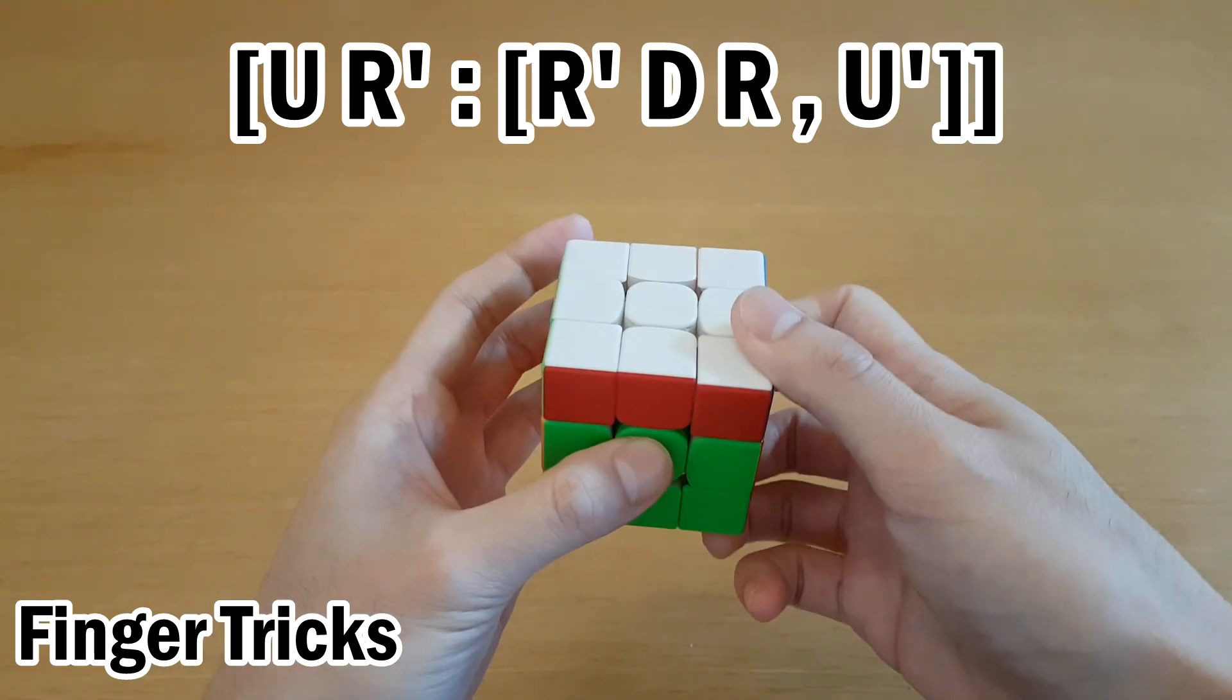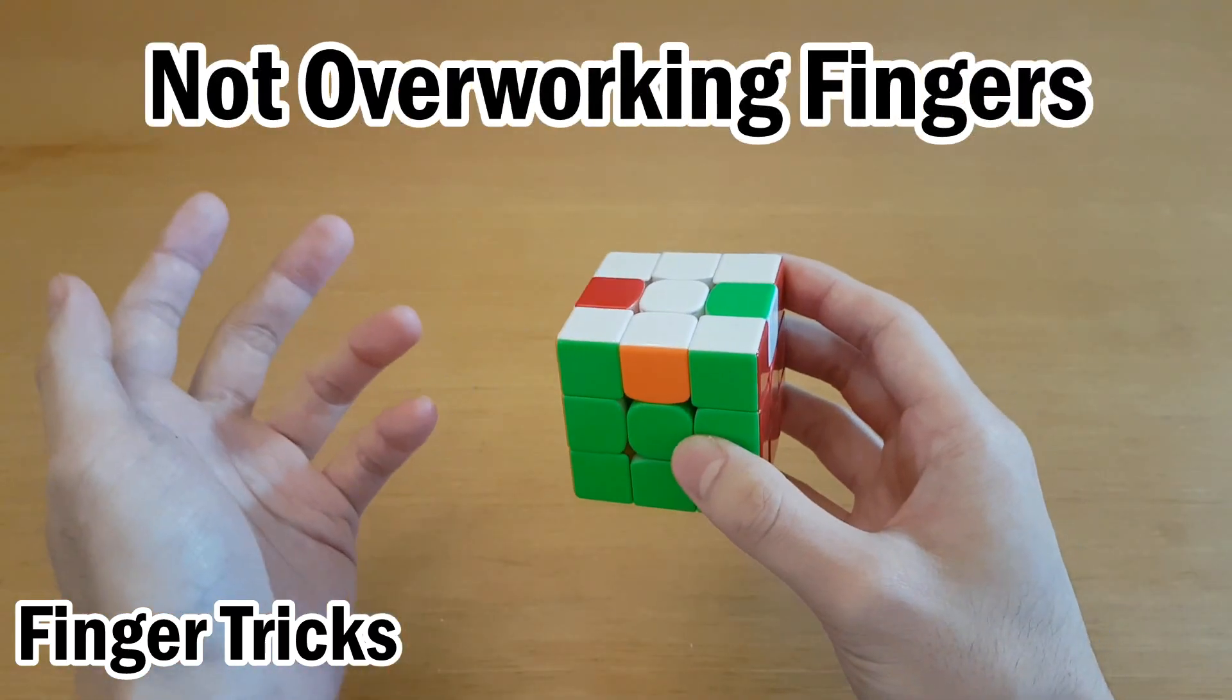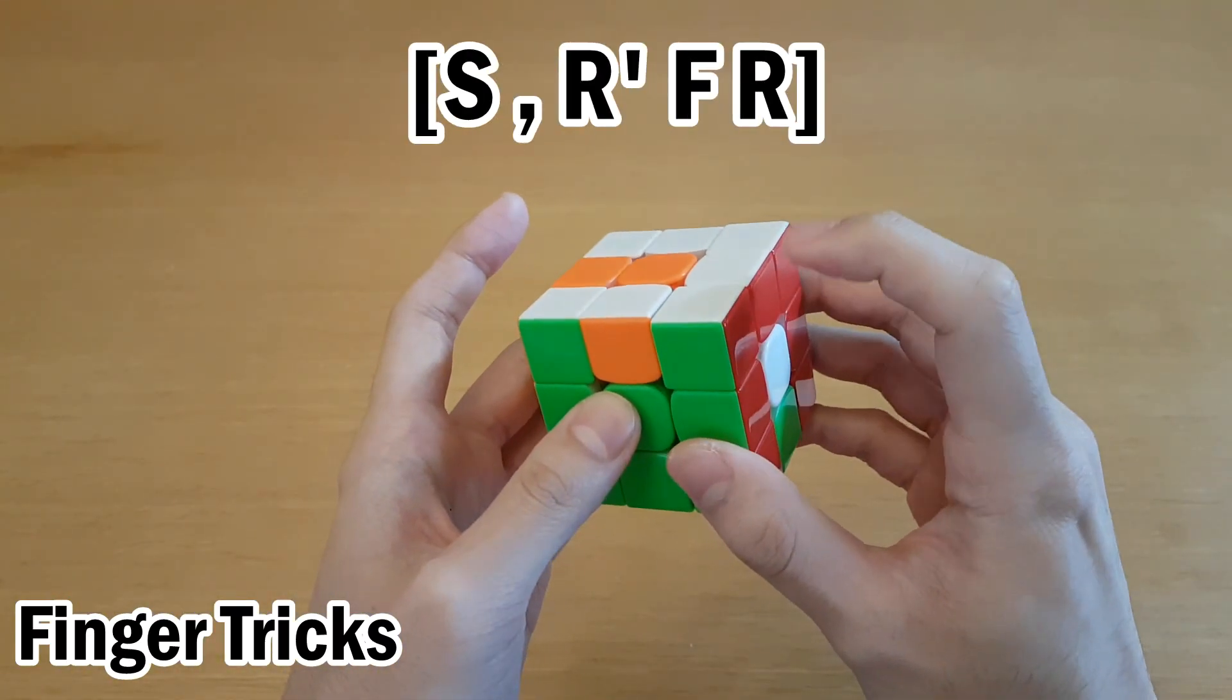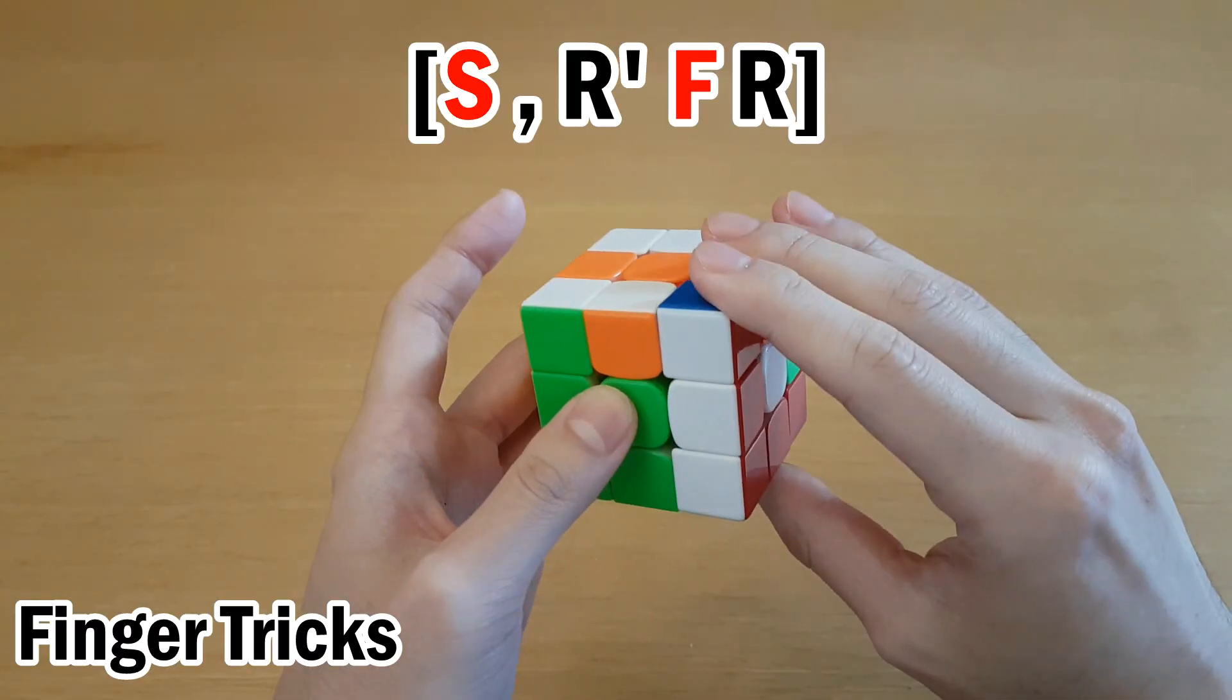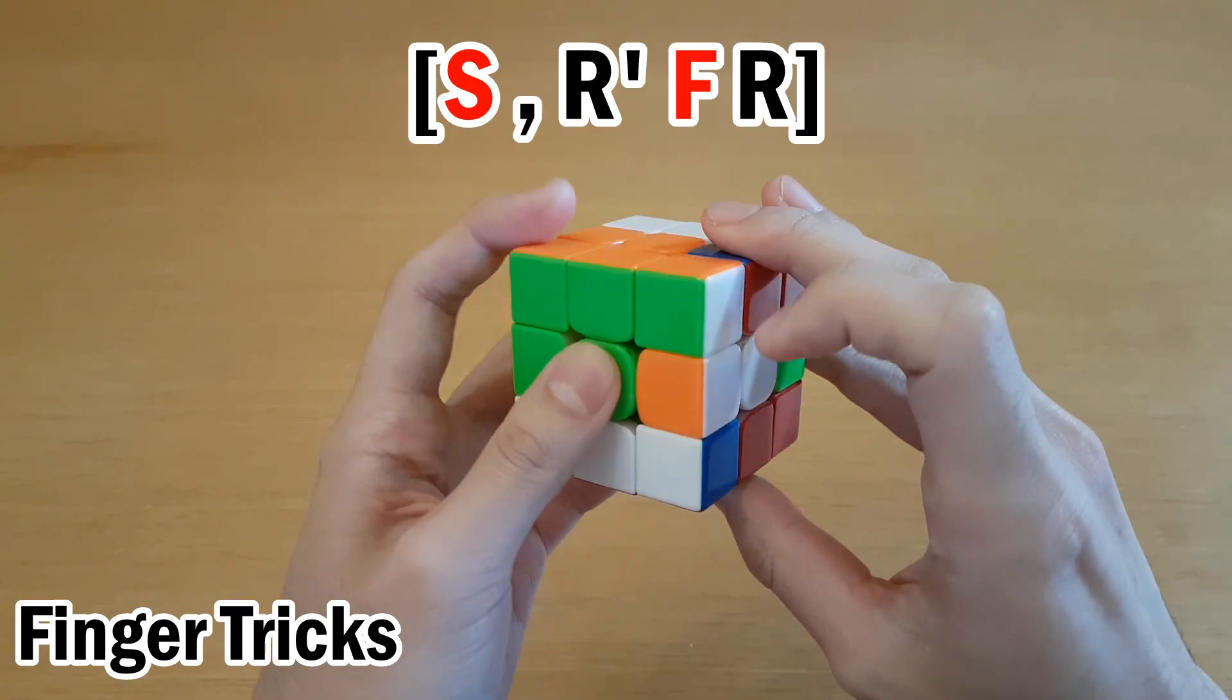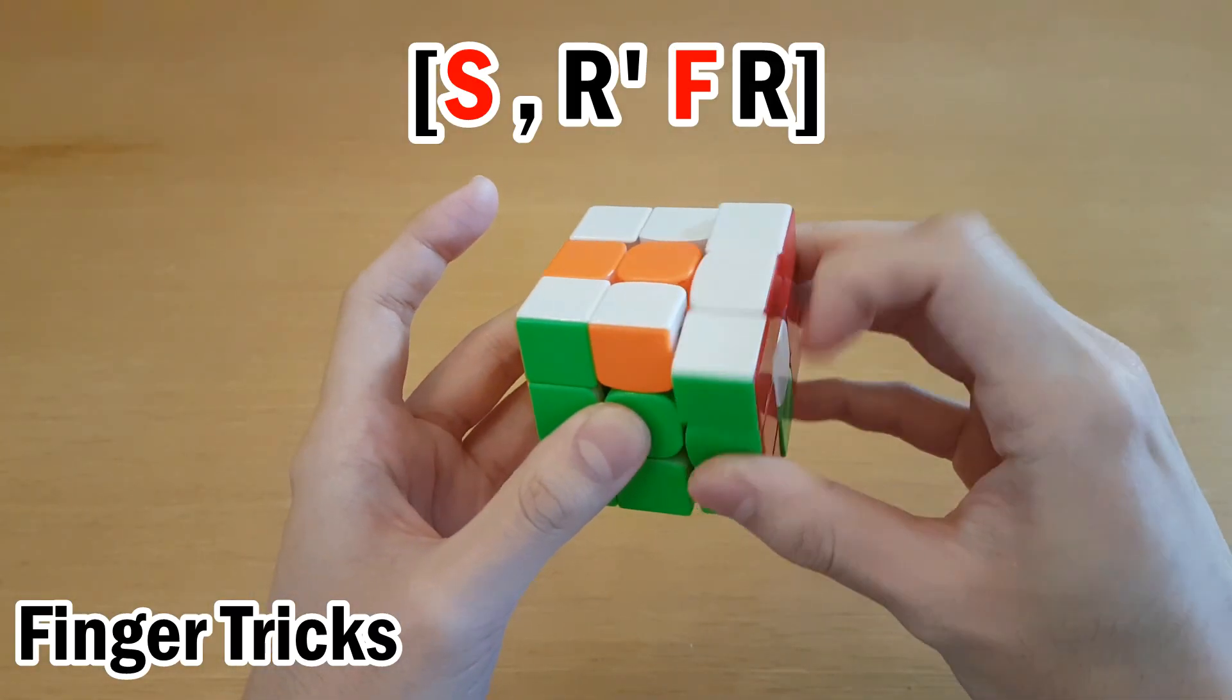And then the re-grip at the end here is done during the U'. You also want to focus on not overworking fingers. In this commutator, we start with S and this is often the best way to do S, but then we have an F move coming two moves later. This is a finger overwork because you're doing these two very quickly with the same finger and you have to take time to reset it.